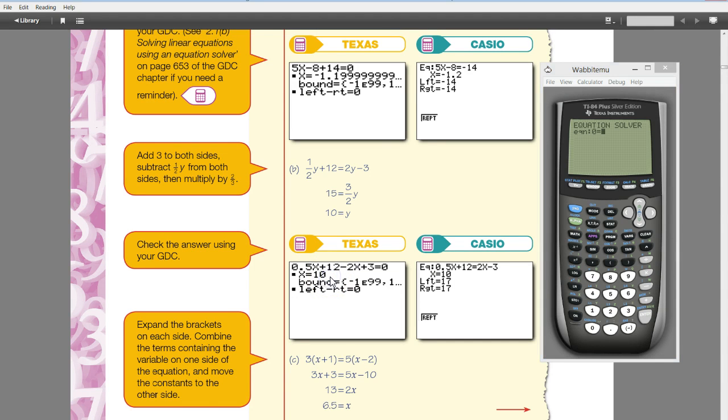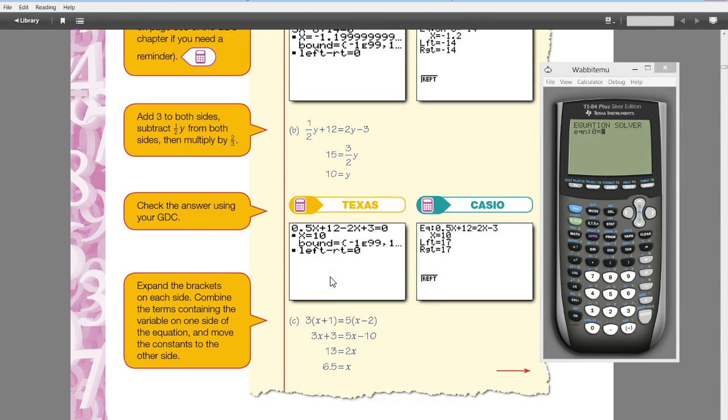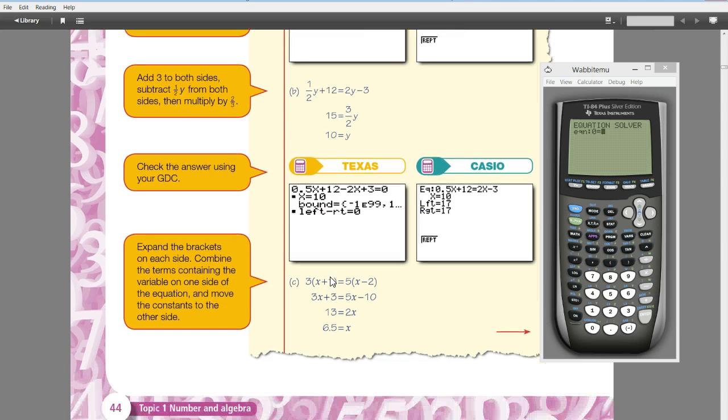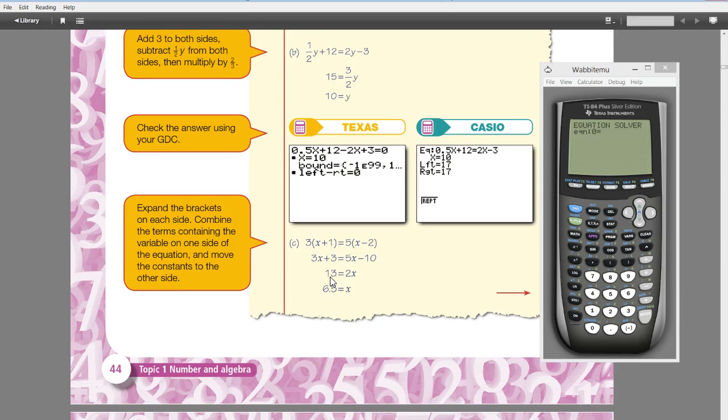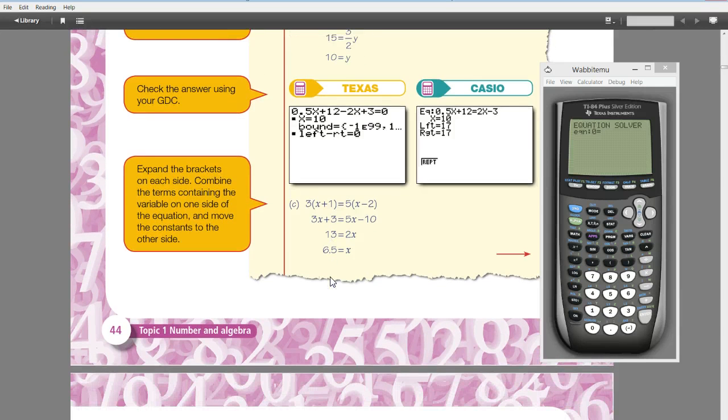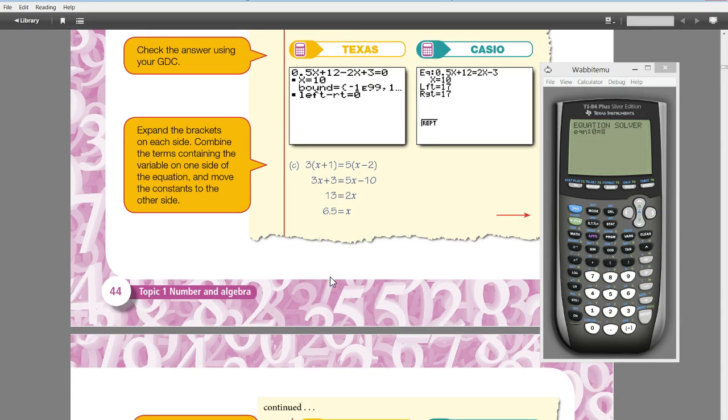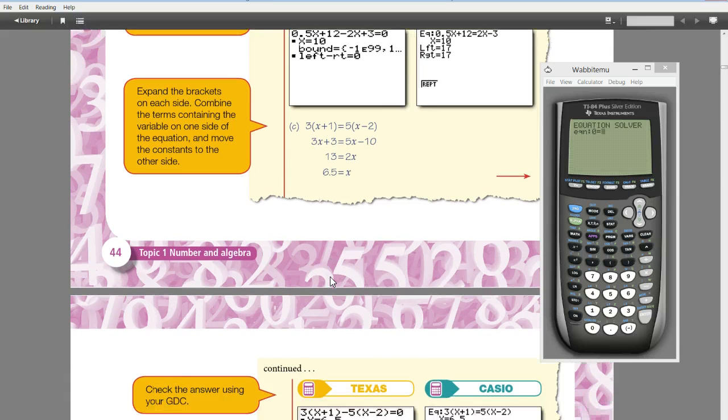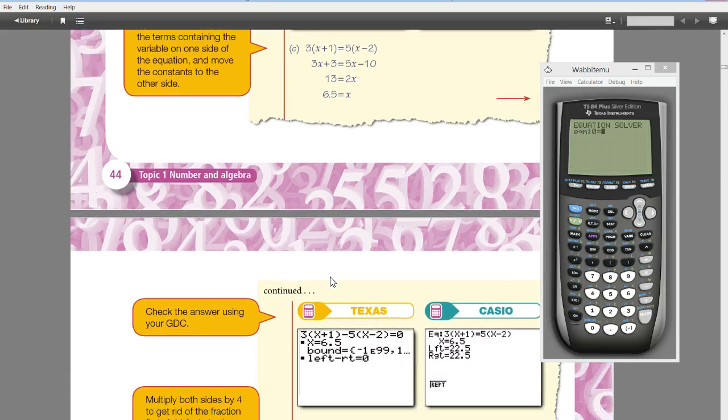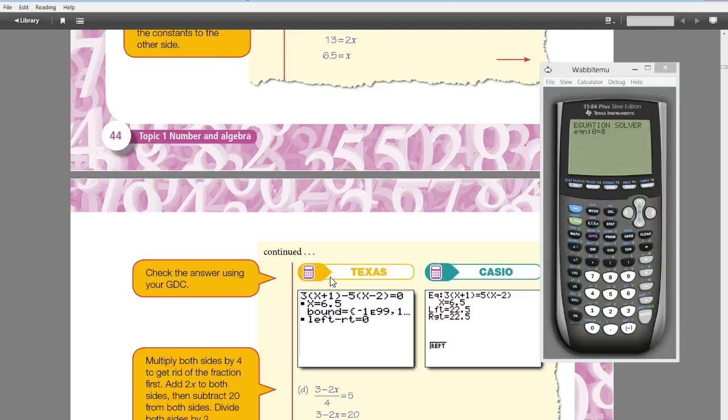You can have equations that are harder to solve. But it all works in the same way. Just move things to either side. It doesn't matter which side. So you have something equal 0 and then you solve.